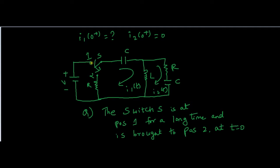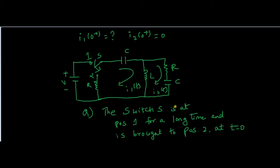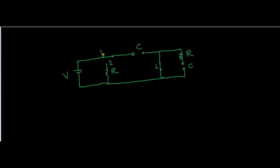The switch is at S equal to 1 for a long time, so the circuit at t equal to 0 minus is typically in this configuration. Neglecting the position 2 elements, we have just a voltage source, an inductor, and a capacitor with this resistor. So this part is not present at t equal to 0 minus. This is the circuit representation when the switch was at position 1.